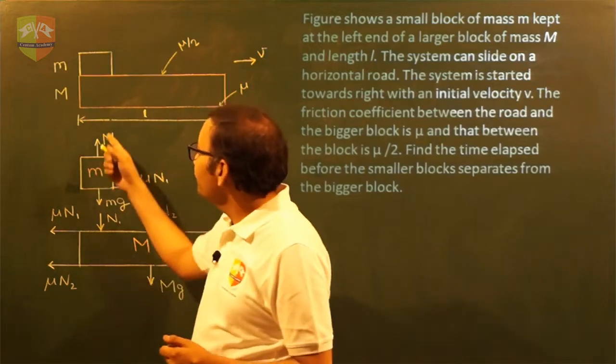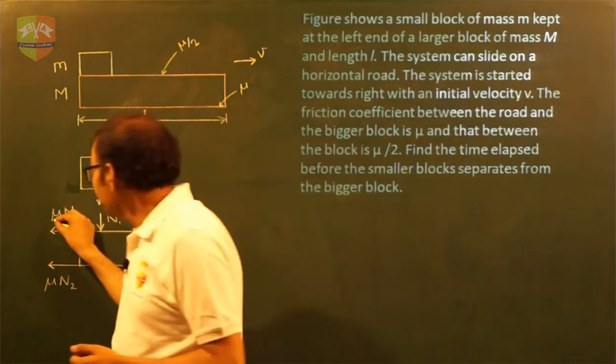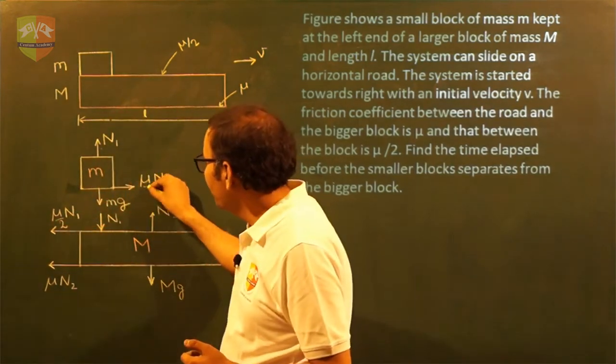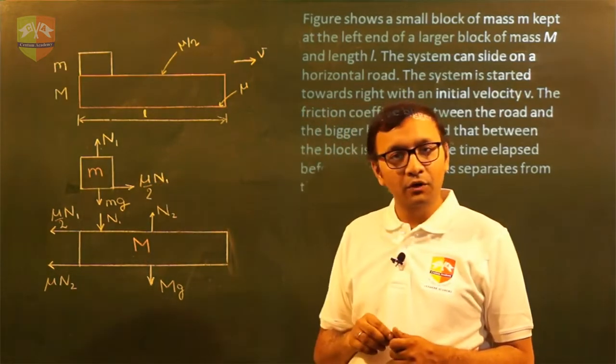See, the coefficient of friction value between small m and capital M is mu by 2. So let us correct this. This is mu by 2 into N1, and similarly here it is mu by 2 into N1.